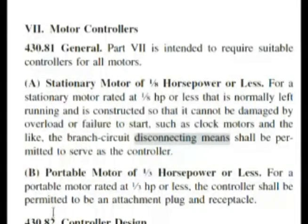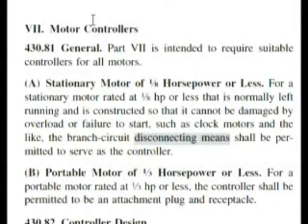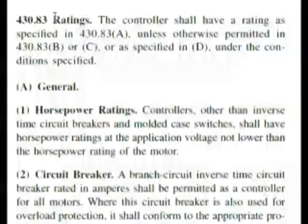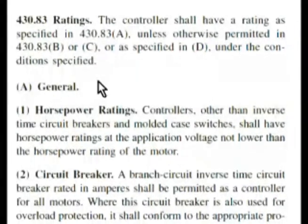Now we're on the left side of the page at the bottom. On the right side of this page there's something that we really need to look at. Here we are at the next column and we have 430.83 ratings. Now our question was asking for something rated, and we really didn't find this when we were looking through the index, which is a little disappointing.